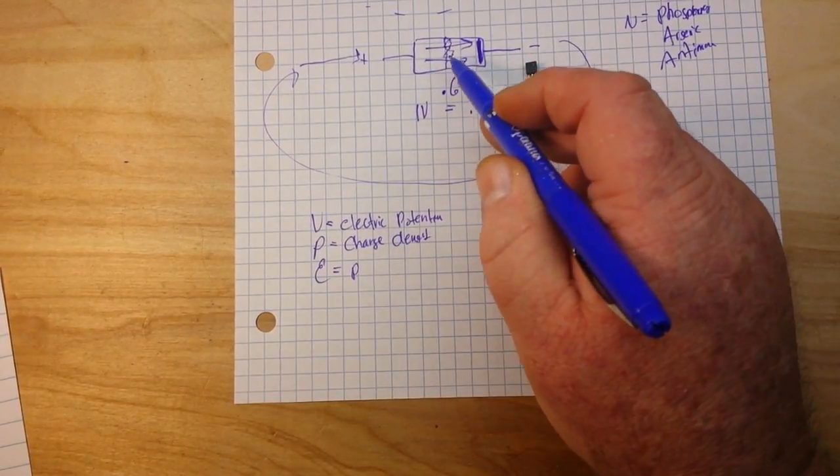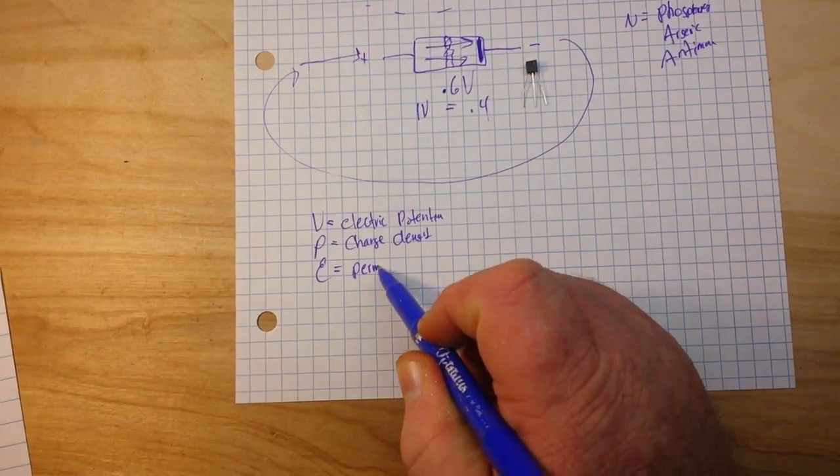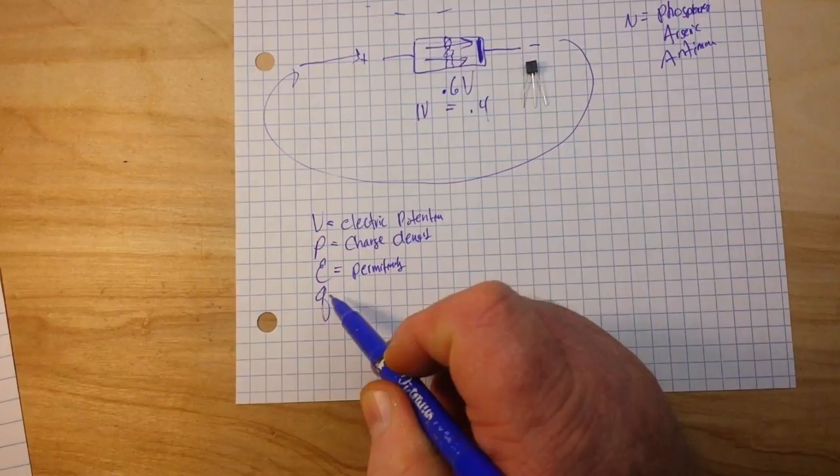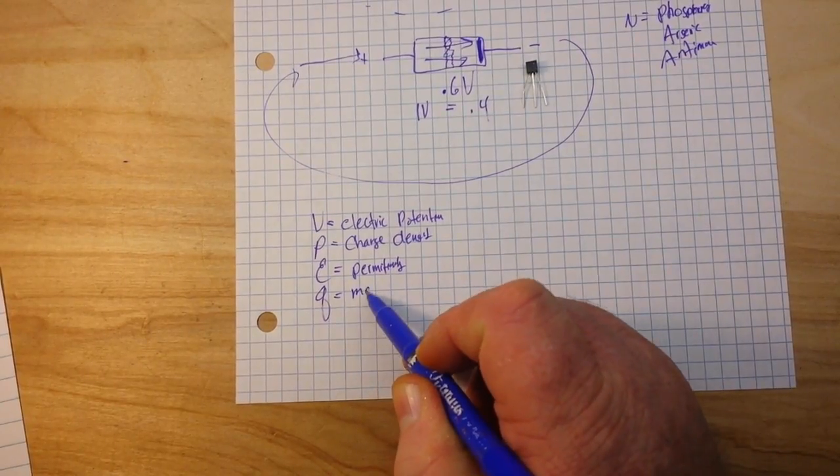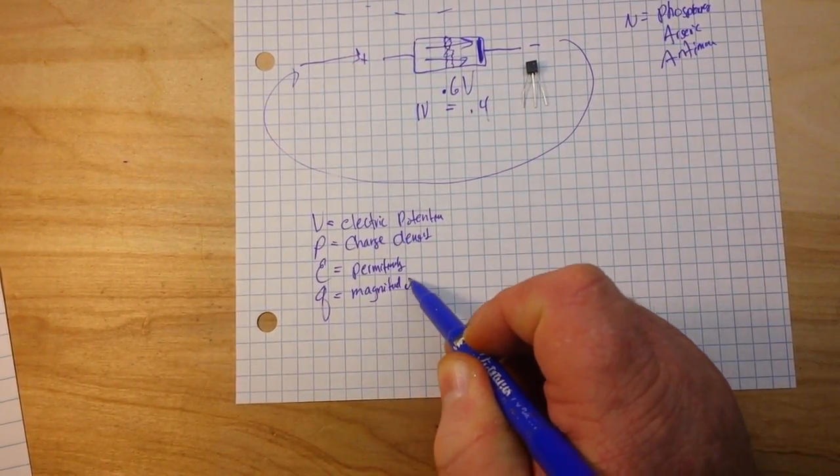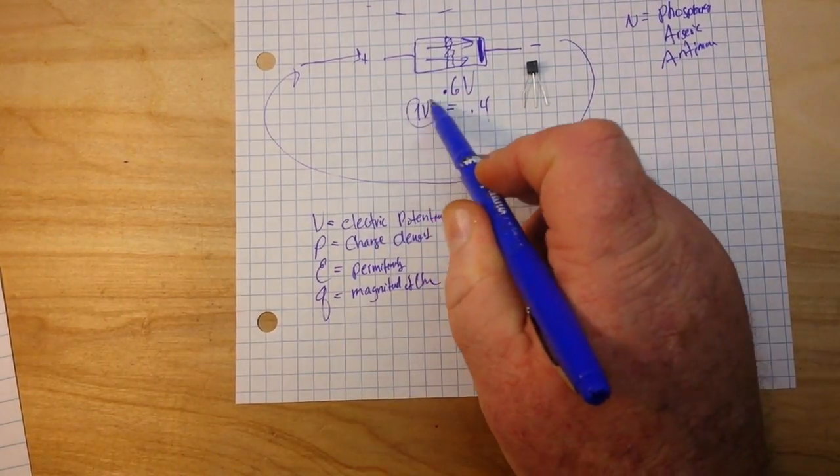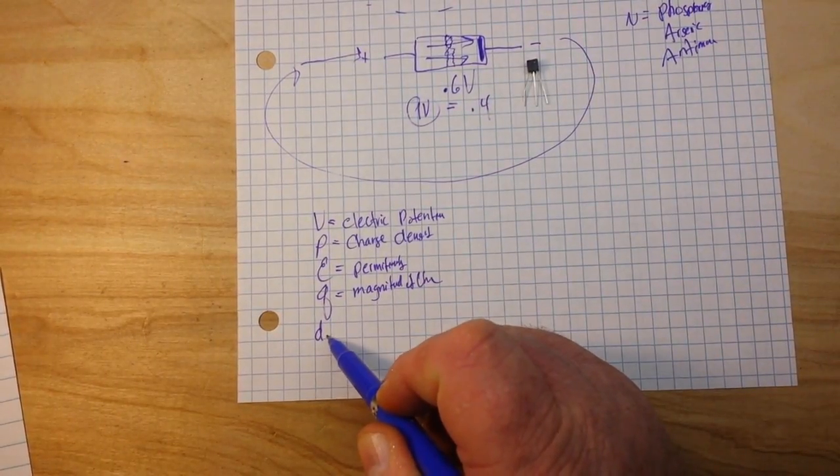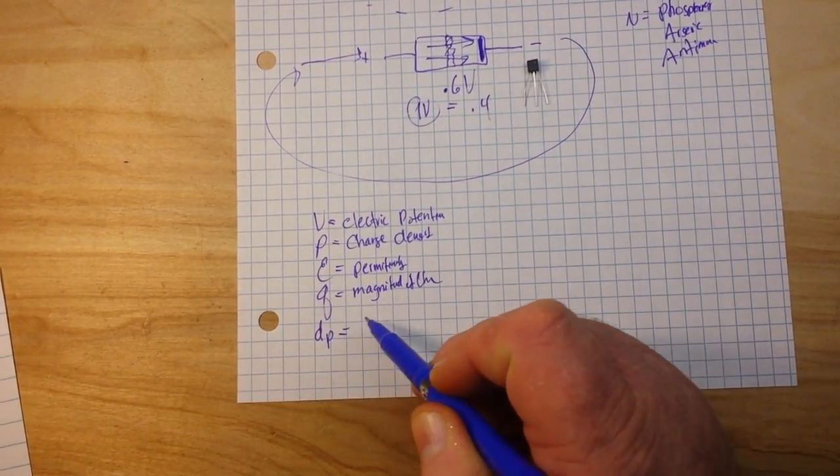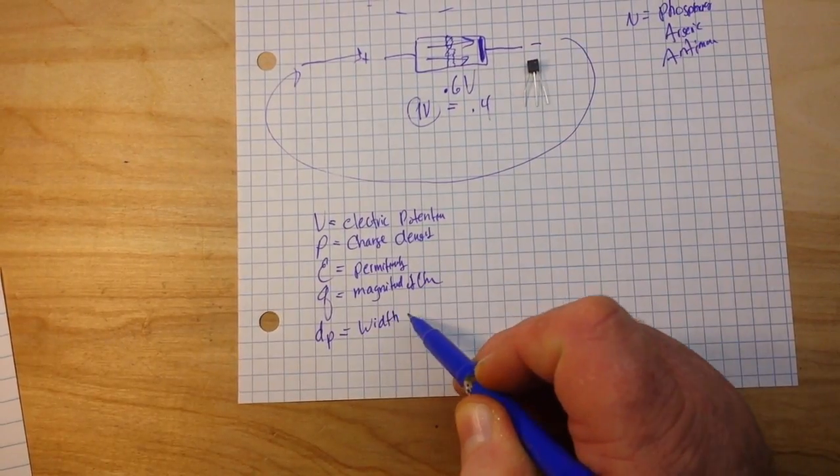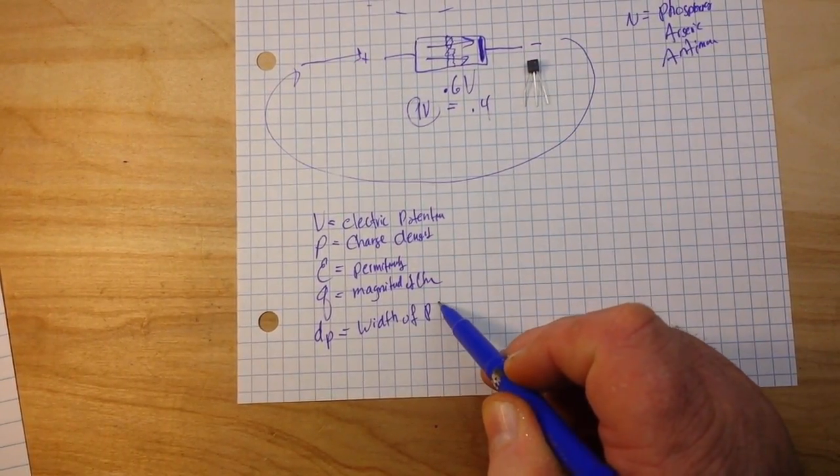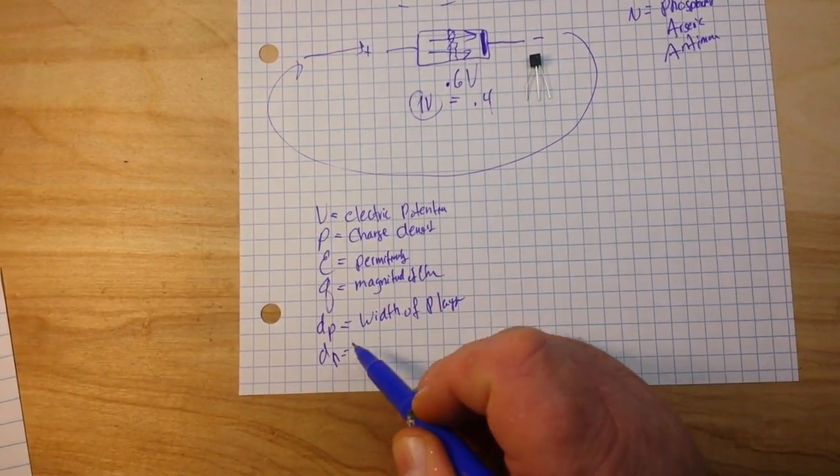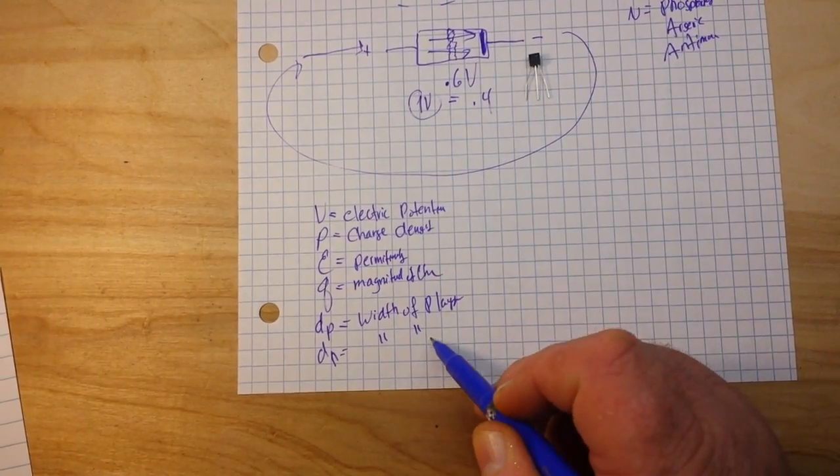which is, we'll call it the size of the holes. And then we'll have our magnitude of charge, that's the other voltage that we're putting in. And then we'll call lowercase d sub p is the width of the p layer. And d sub n is the width of the n layer.